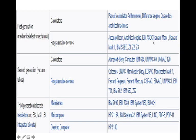Here is a brief summary taken from Wikipedia. The first generation was mechanical — we had calculators and programmable devices. Earlier ones were Pascal's calculator and similar devices. Then programmable devices like Jacquard looms and analytical engines formed the first generation, along with Z1, Z2, and Z3.